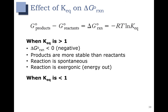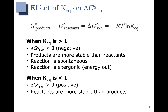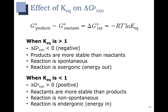When Keq is less than 1, what you would get is a positive delta G — delta G will be greater than 0. This means that the reactants are more stable than the products, and the reaction is non-spontaneous. The reaction is also endergonic, meaning that it requires energy, or energy goes in. This type of reaction is not favored. This is an uphill reaction.